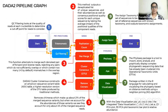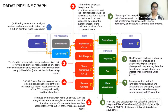The DADA2 pipeline implements a complete workflow to turn the paired-end FASTQ files from the sequencer into merged, denoised, chimera-free, inferred sample sequences. By using the DADA2 algorithm, fine-scale variations are identified and a quality-based model is produced, resulting in merged, denoised, chimera-free, inferred sample sequences.